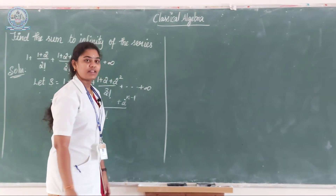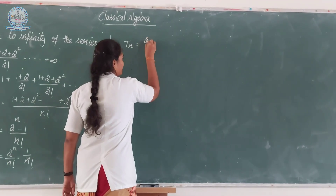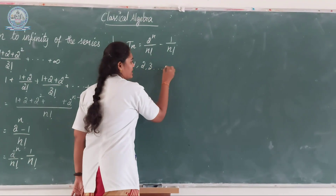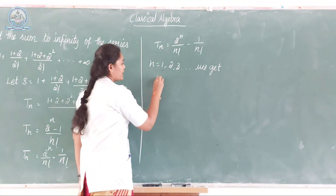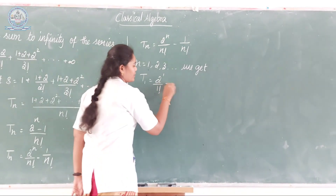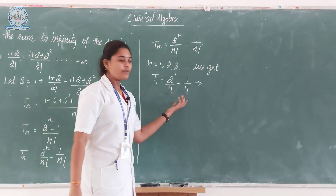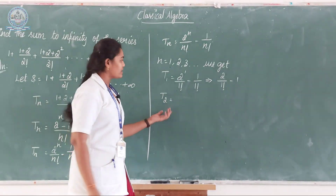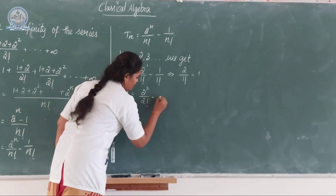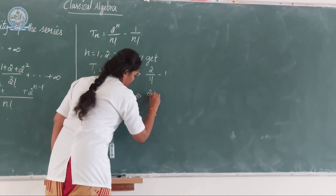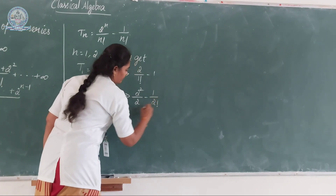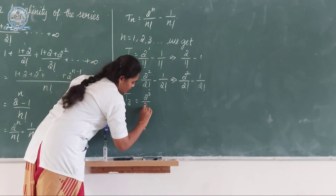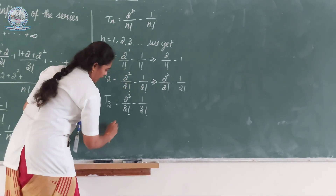Now applying n equal to 1, 2, 3, and so on: t1 equals 2 to the power 1 over 1 factorial minus 1 over 1 factorial, which gives 2 over 1 factorial minus 1. For n equal to 2: t2 equals 2 squared over 2 factorial minus 1 over 2 factorial. For n equal to 3: t3 equals 2 cubed over 3 factorial minus 1 over 3 factorial, and so on.